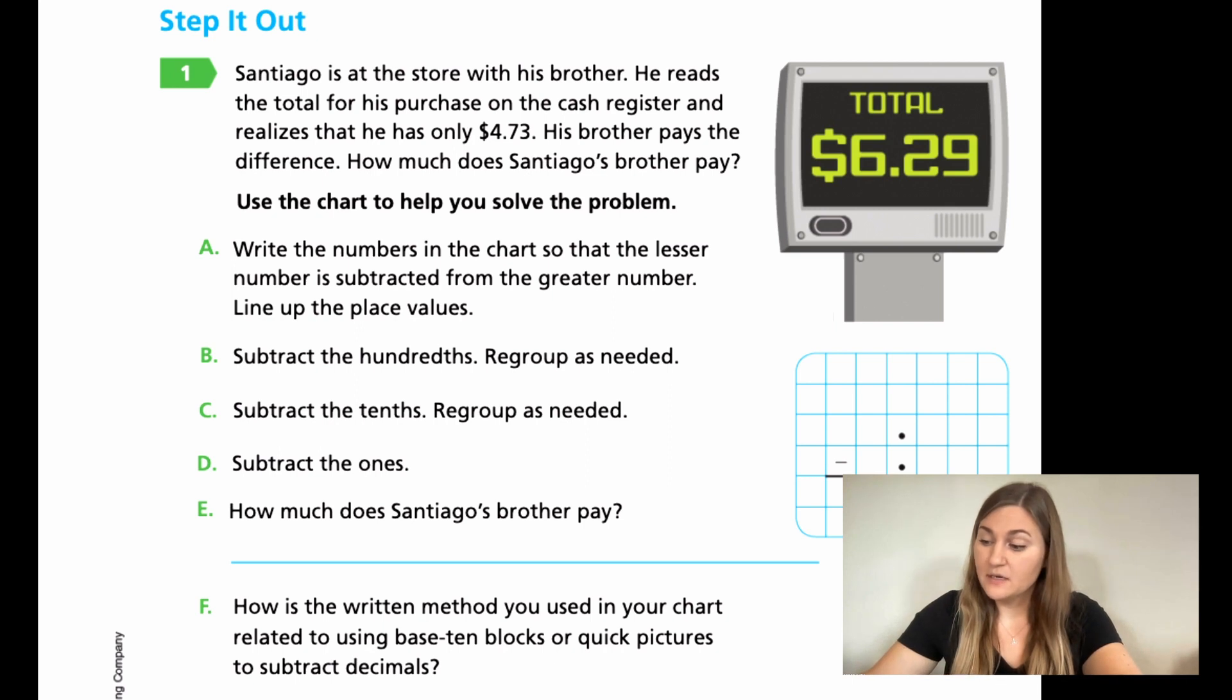We need to figure out what was left. What did his brother pay? So for A, it says, write the numbers in the chart so that the lesser number is subtracted from the greater number. That's another way to say, put the bigger number on top. Just like with normal subtraction, bigger number goes on top.